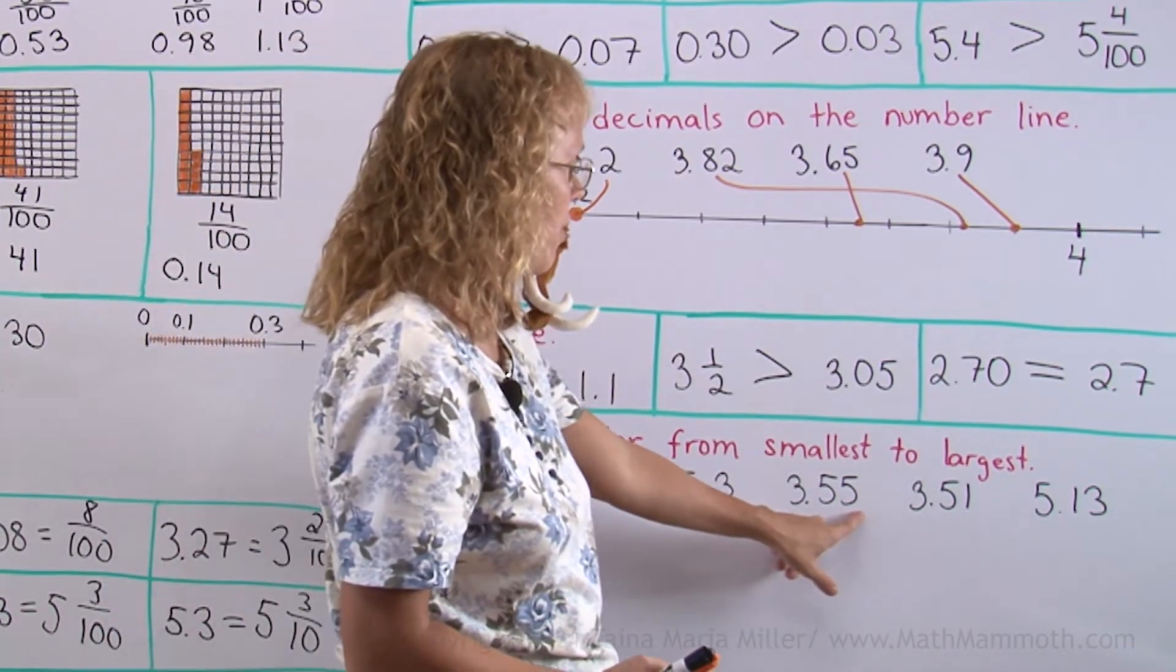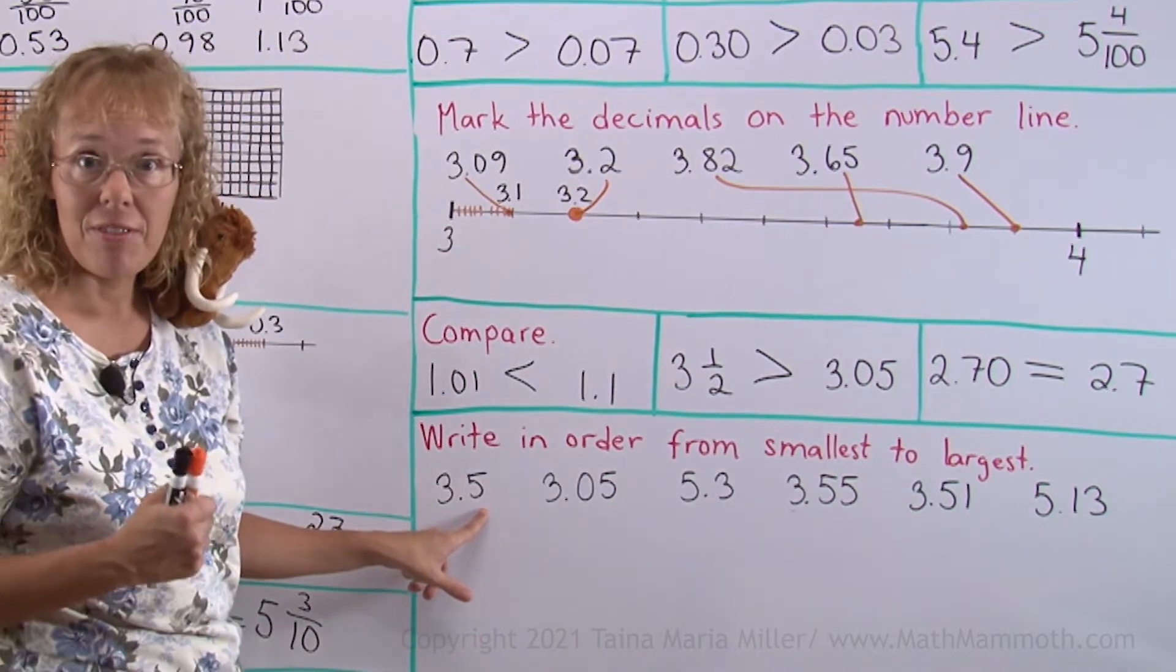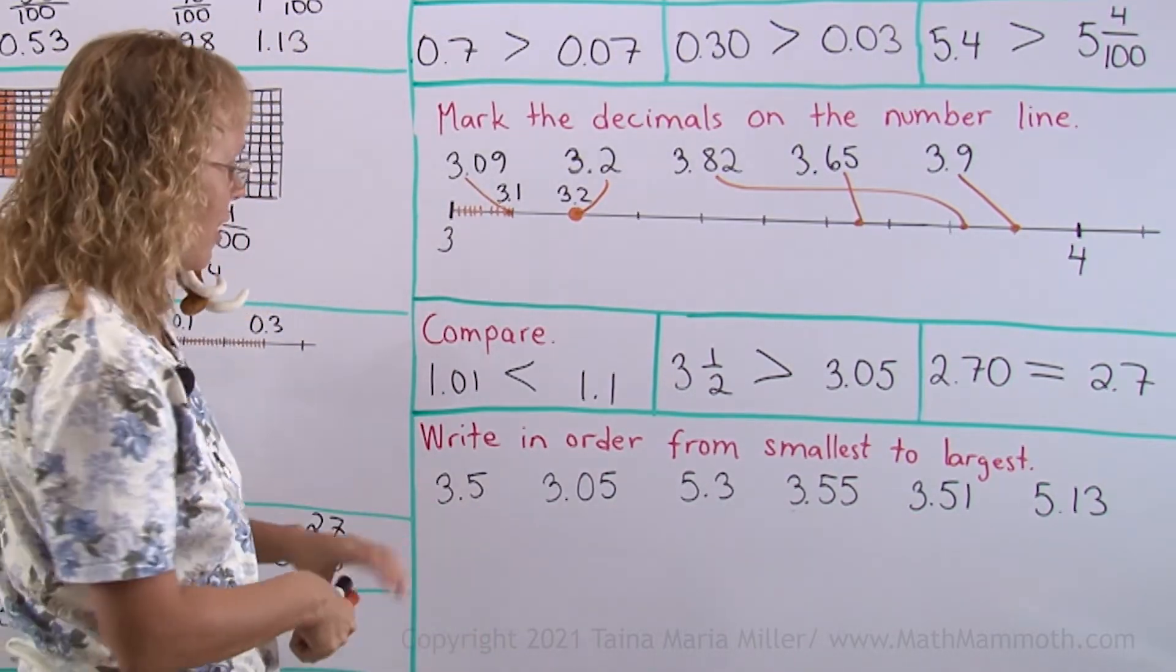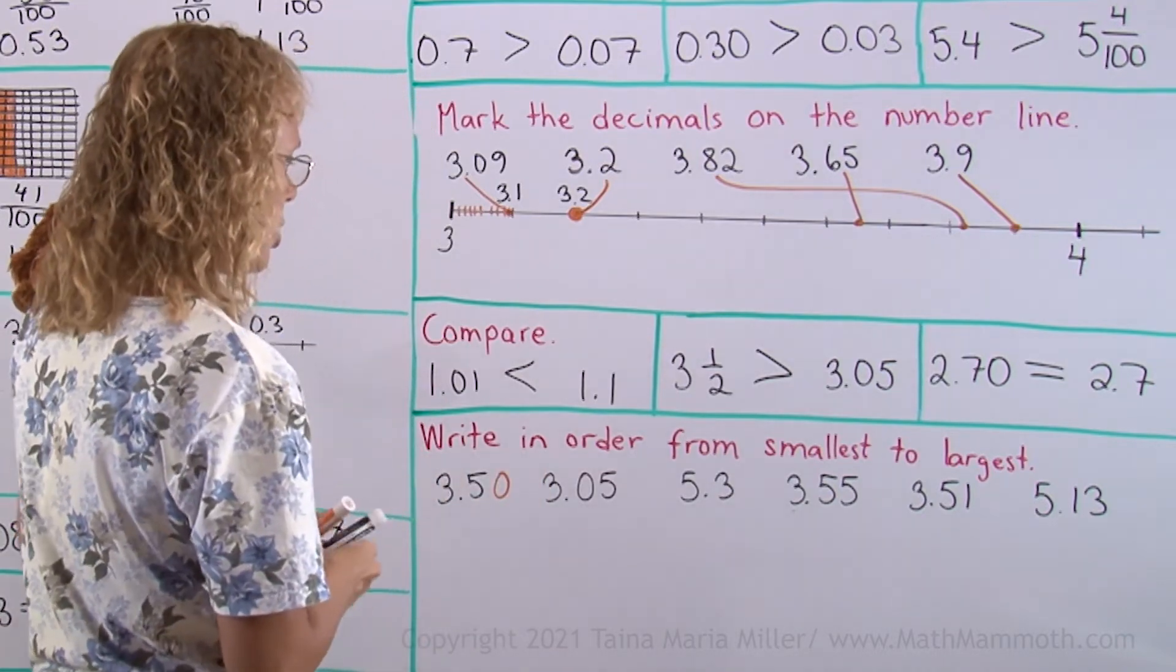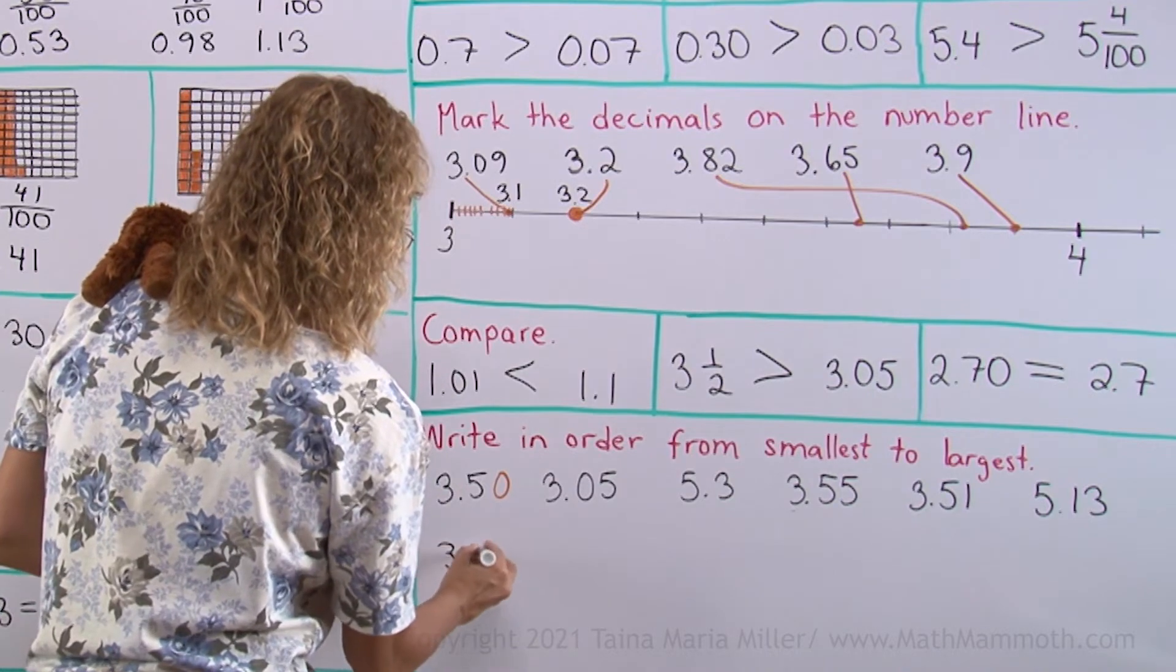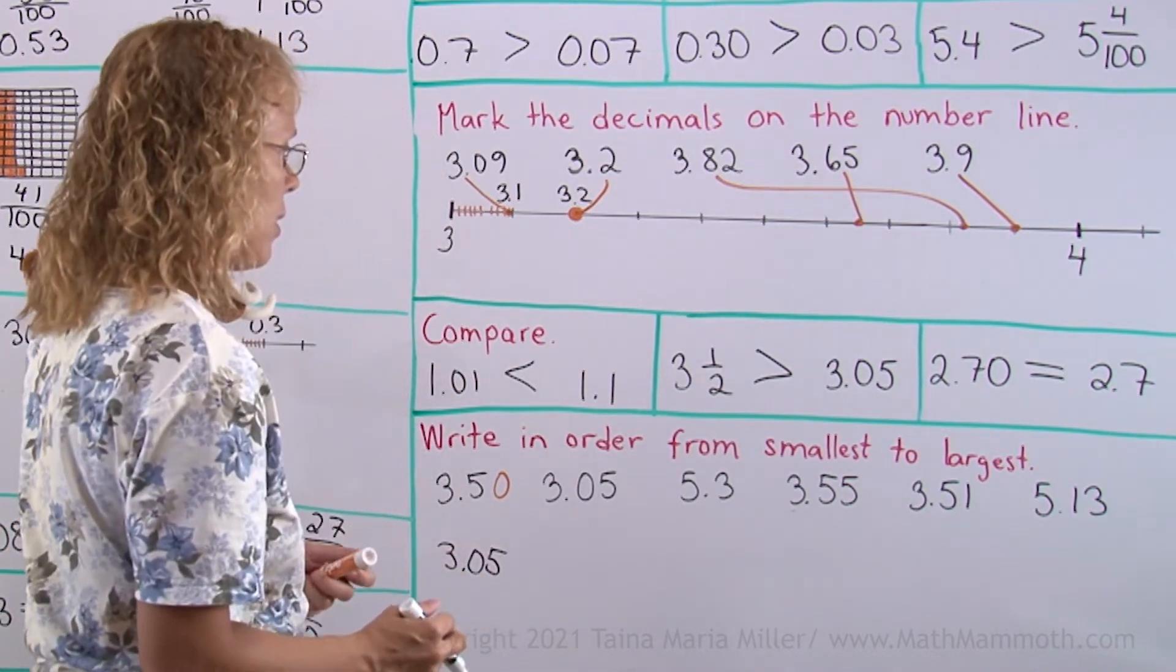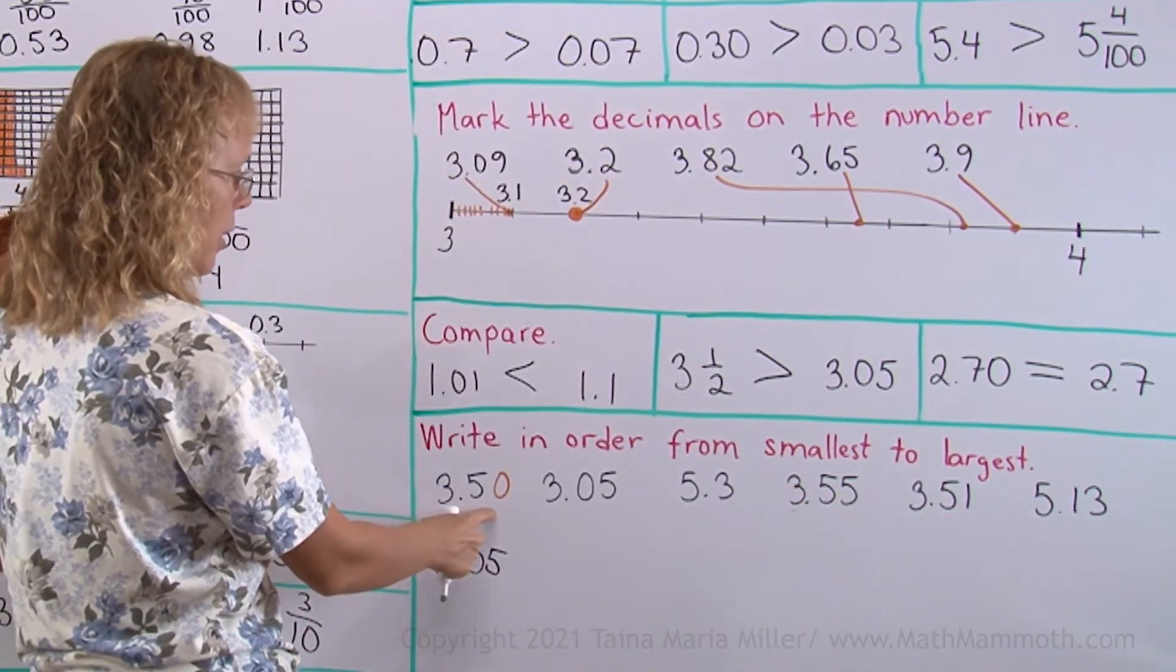This one here has 55 hundredths, 51 hundredths and this one would have 50 hundredths if I tag another 0 to it. So this is the smallest number. Then I have these 3 to order and this one comes next.